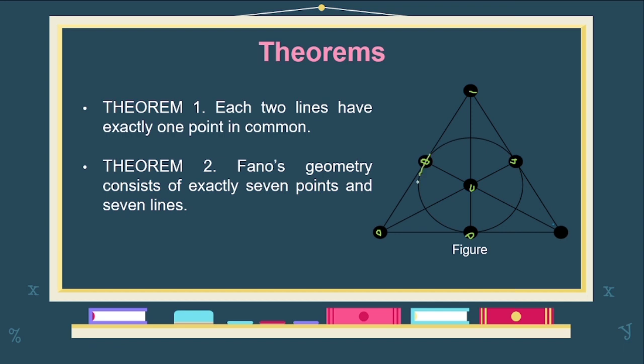This circle in the figure is not actually a circle. It just appears that way because we used the perspective of the Euclidean plane. In reality it is a straight line. All the lines in Fano's geometry are straight lines — it is just because of the Euclidean plane representation that it appears as a circle. There is no actual circle in a Fano plane; they are all straight lines.